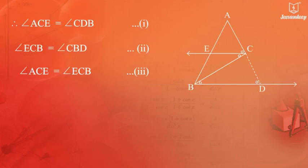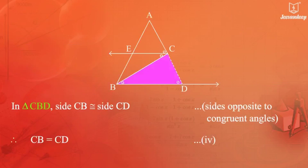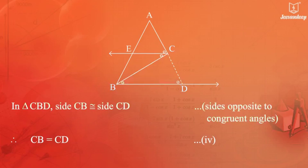From equations 1, 2, and 3, we get angle CBD equals angle CDB. In triangle CBD, side CB is congruent to side CD, being sides opposite to congruent angles. Therefore, CB equals CD. (Equation 4)